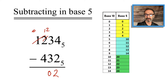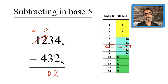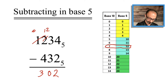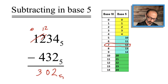1 2 in base 5 means 1 five and 2 units, which is like 7. So 7 minus 4 is 3. That should be the answer. You can double-check by adding 3 0 2 plus 4 3 2, and that will give you 1 2 3 4. That takes care of this example — two more to go.